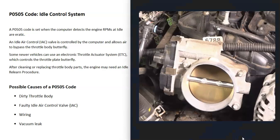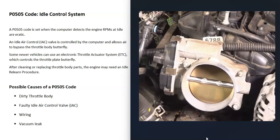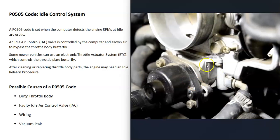When you press on the gas pedal, this butterfly plate opens up and lets more air in so the engine can make power. But when you let go of the gas pedal, this butterfly plate closes, and the vehicle's computer takes over and starts controlling the idle speed using what's called an idle air control valve.